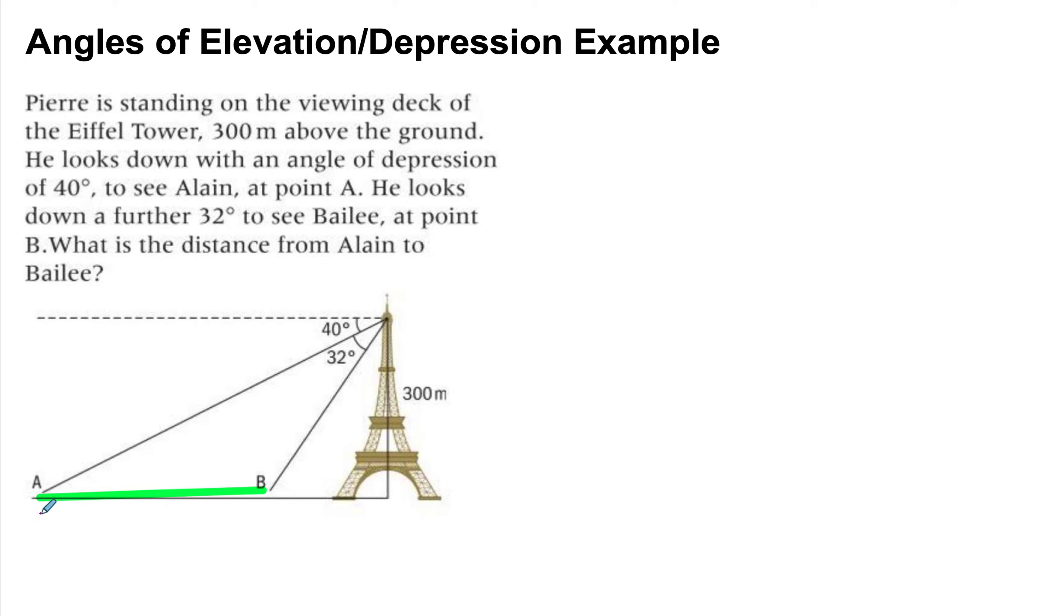So basically what we want to do is we want to find this full distance from Alain to, let's call this point Pierre, and then we want to find this distance from Bailey to Pierre, and then when we subtract them from each other, we'll be able to find the distance from,